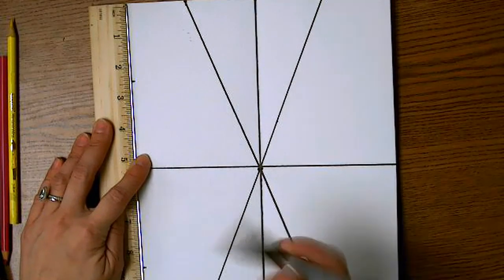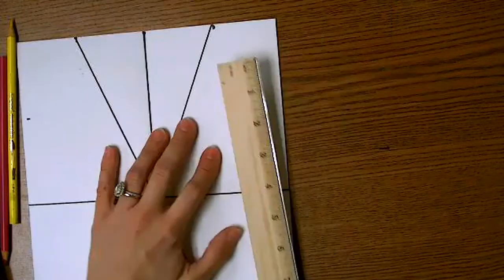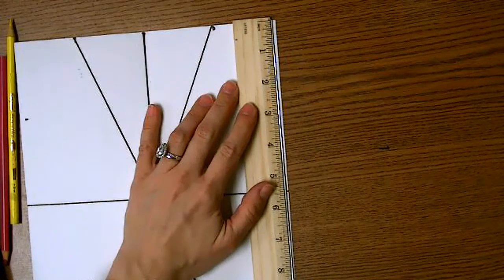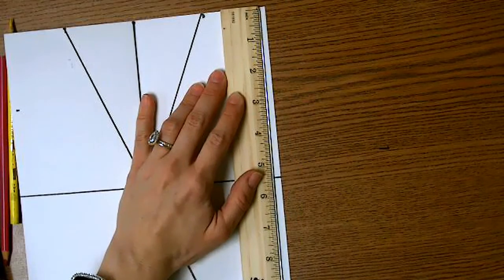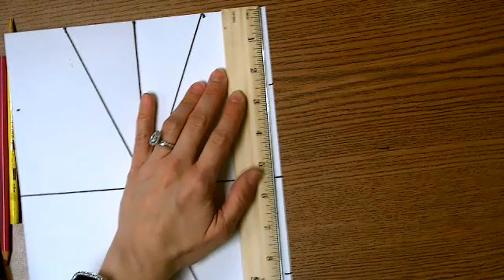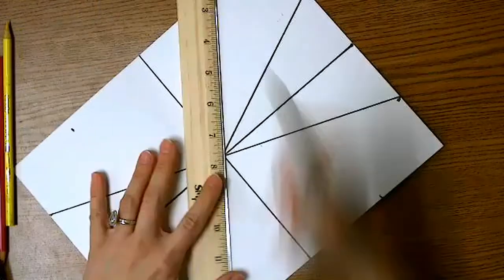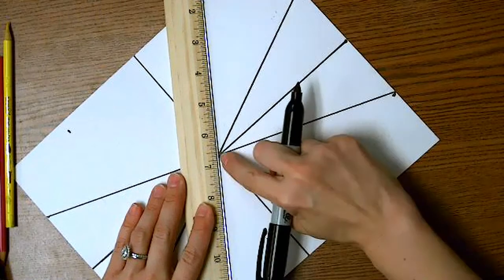So now I'm making a mark at two and a half and at eight and a half. My ruler is lined up at the edge of the page with the top of the ruler at the top of the page. I'm going to do the same thing on the other side. Make a mark at two and a half and eight and a half. If you're not sure where that is, it's directly between the two and the three and it's directly between the eight and the nine.